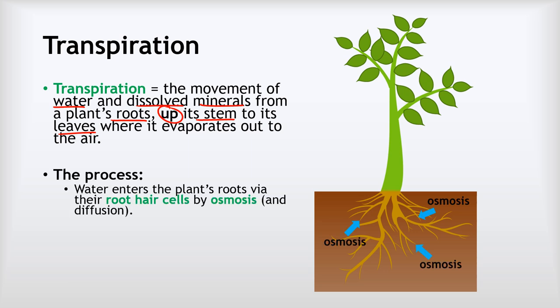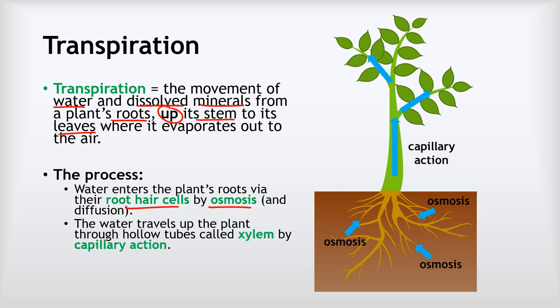In terms of the process, the first step is water entering the plant's roots via their root hair cells by osmosis, for the most part. There's also some diffusion happening as well - some water just diffuses along the plant's cell walls without actually going into the individual cells. The next step is capillary action, where the water starts to move up the plant through those hollow tubes called xylem.